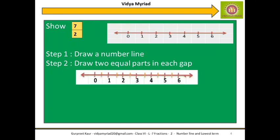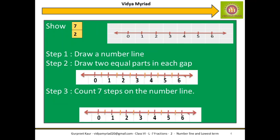So there is 0, 1, 2, 3, 4, 5, 6 — each gap divided into 2 parts. Next, I will simply count the number in the numerator. I have 7 in the numerator, so I just count the jumps: 1, 2, 3, 4, 5, 6 and 7. So this is the place which will represent your 7 by 2.